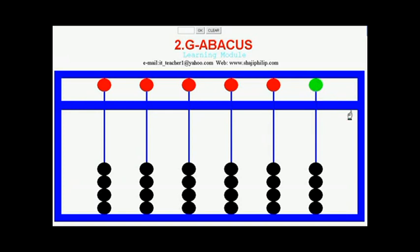Each heaven bead has a value of five, and each earth bead has a value of one. Also, the value of the beads depends upon the position of the rod.